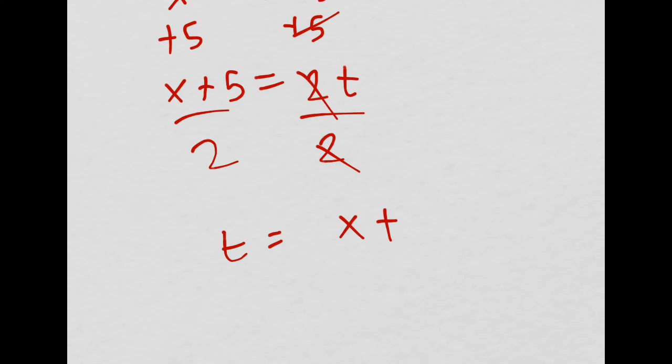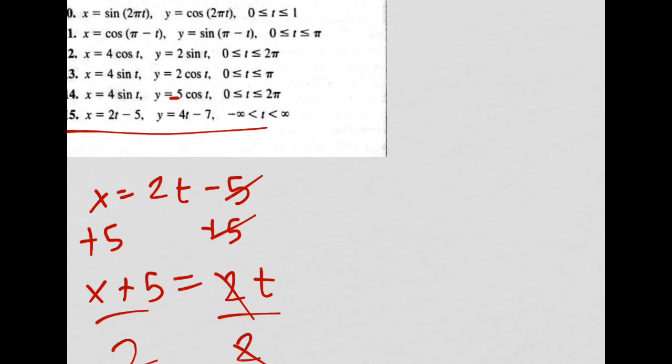2t is equal to x plus 5, all of that is divided by 2. And then I'm going to plug it into this.